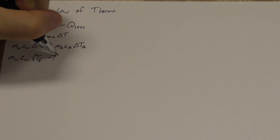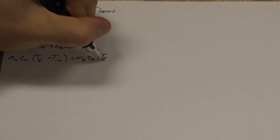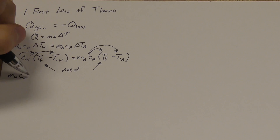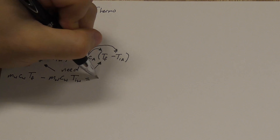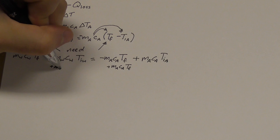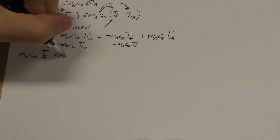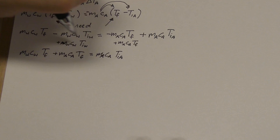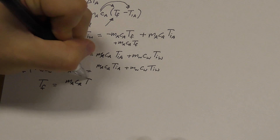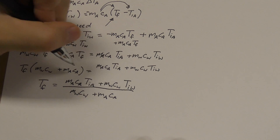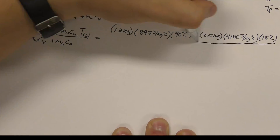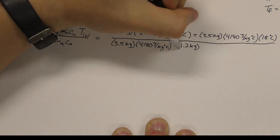We want T final, so we need to foil out the T_F from the delta T. It gets really messy if we do this. Now that we've made a mess, we have to organize. The initial terms move to one side, and the final terms move to the other. If we factor the T_F out, we can divide both sides by M_W C_W plus M_A C_A and get our final equation for T_F. If we plug in all of our information into this equation, we get the final temperature to be 22.9 degrees Celsius.